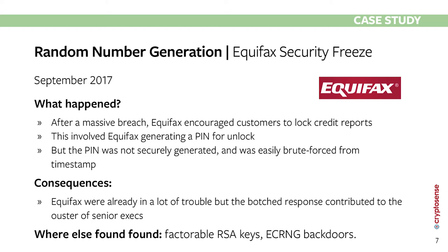The PIN that was supposed to be random wasn't securely generated. Once you'd seen your own PIN, it was easy to work out someone else's — it was essentially generated directly from a timestamp. Since everyone was locking their credit reports in a very short period, an attacker with Equifax's stolen data could brute-force the PIN from a rough timestamp window. This botched response didn't help the executives, a number of whom were removed shortly afterwards.